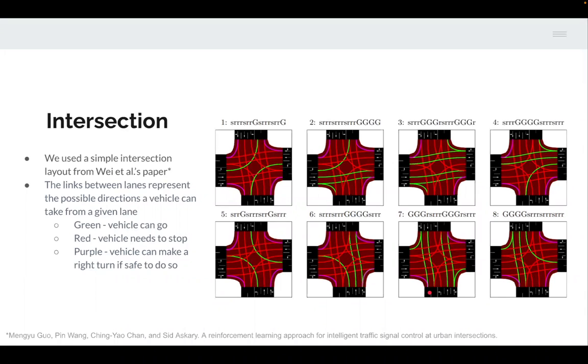Here you can view the intersection we used during our research. The different links between lanes represent the possible directions a vehicle can take from any lane. For our intersection, they have three states: green means the vehicle can go, red means the vehicle needs to stop, and purple is where a vehicle can turn right if it's safe to do so. This intersection comes from a paper from Wei et al., who defined eight different states the agent can switch to. The goal is to switch at each time step to the state which optimizes the flow at the intersection.